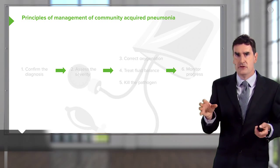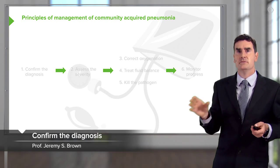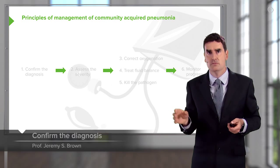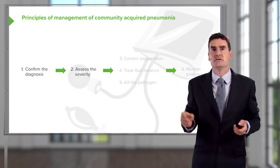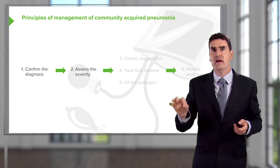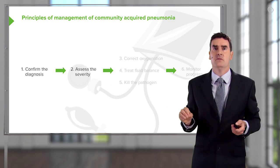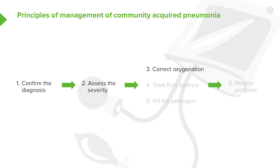The principles of management of somebody presenting with community-acquired pneumonia are: first, confirm the diagnosis; then assess the severity; then think about treatment, which has three main components. Correct the oxygenation, because that's the risk for mortality. Treat the fluid balance, because hypotension is a risk for the patient. And third, it's an infection, so you need to kill the pathogen, which requires antibiotics. Then you need to monitor to make sure the patient is improving with whatever management you've instigated.